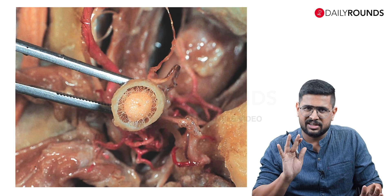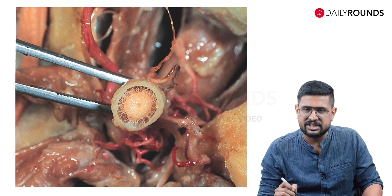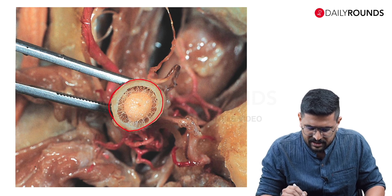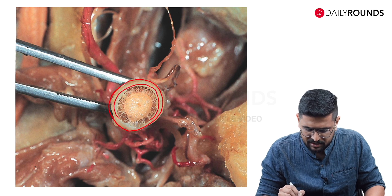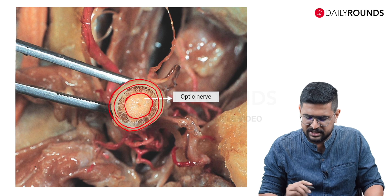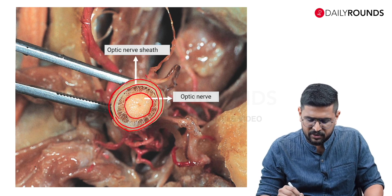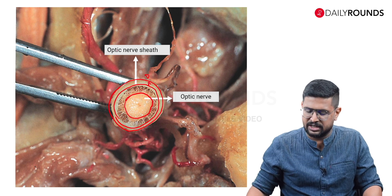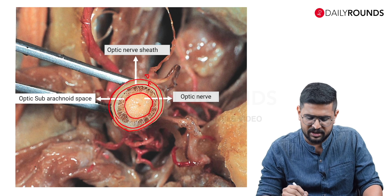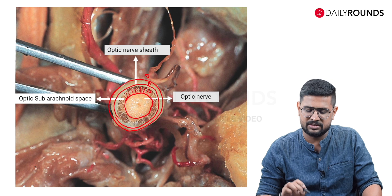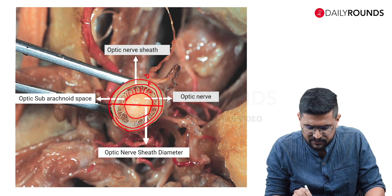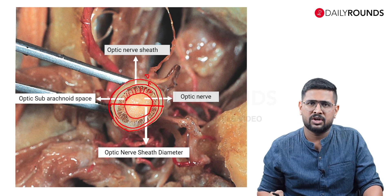One more image to help understand this concept: this is a cut section of an optic nerve. The outermost layer is the dura mater, underneath which is the arachnoid matter. Inside, you can see the optic nerve itself. The dura mater and the arachnoid together form the optic nerve sheath, and between them is the potential space of the subarachnoid space where CSF flows. Our area of interest — the optic nerve sheath diameter — extends from outer to outer, and this is what we measure using ultrasound.